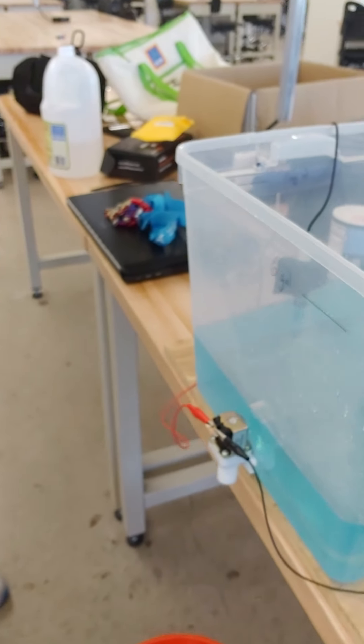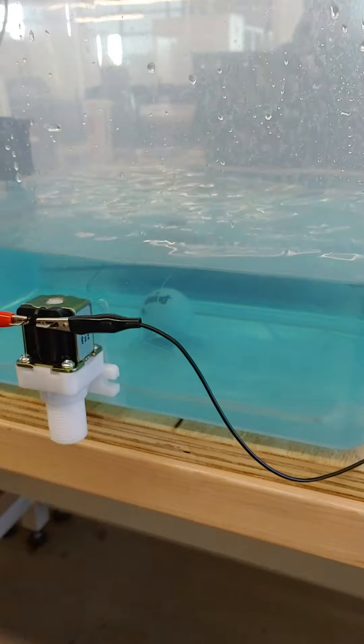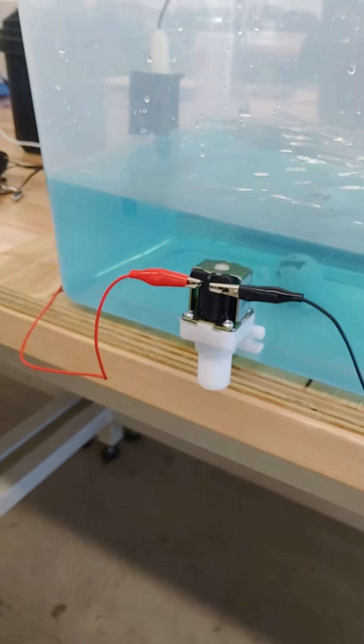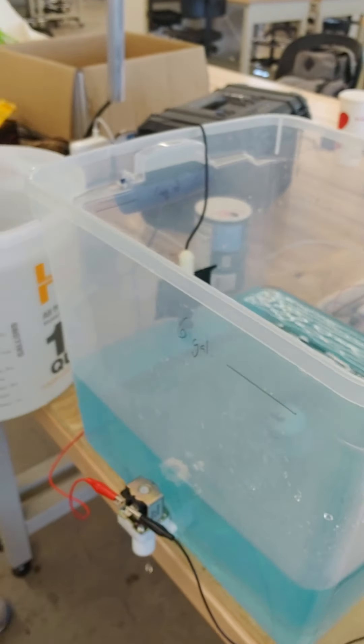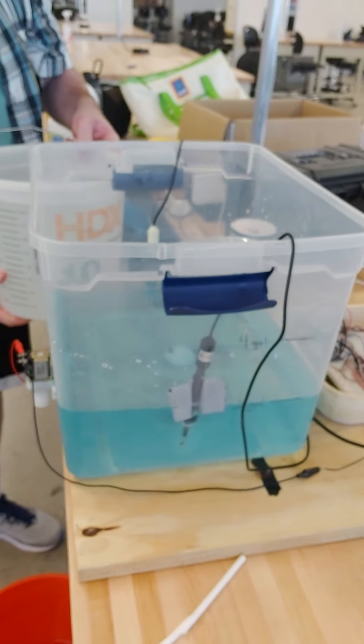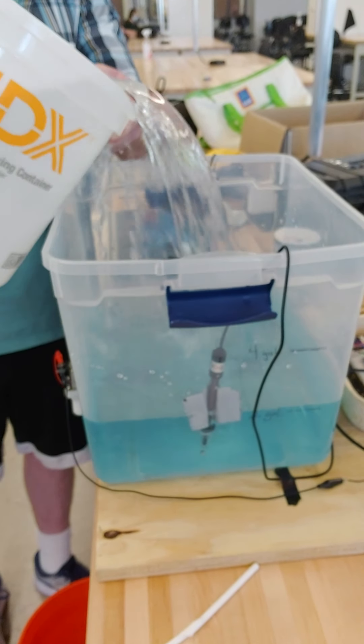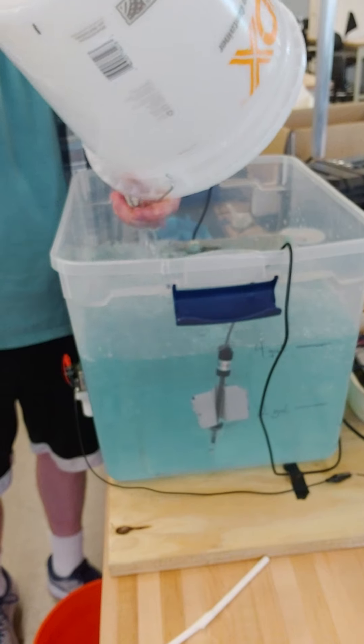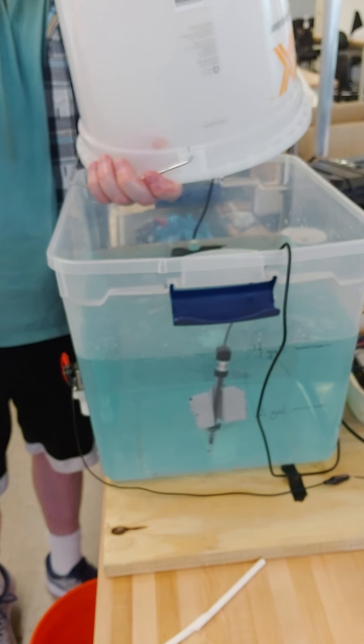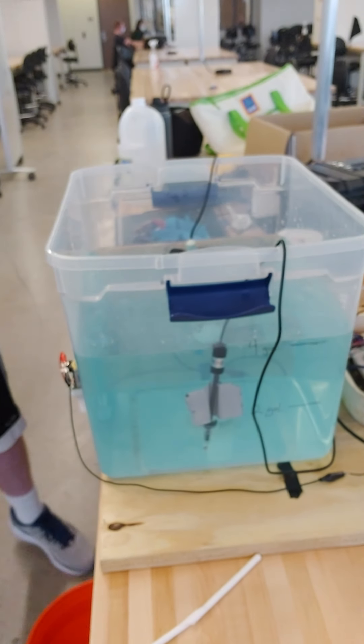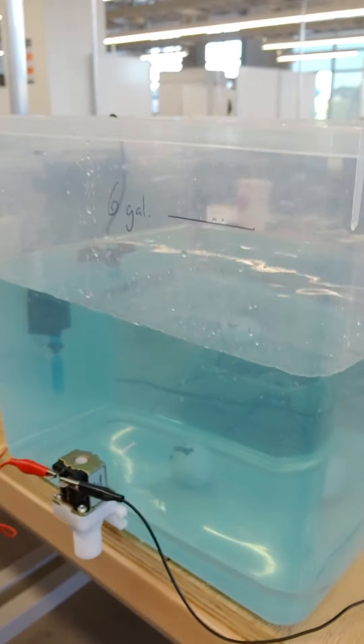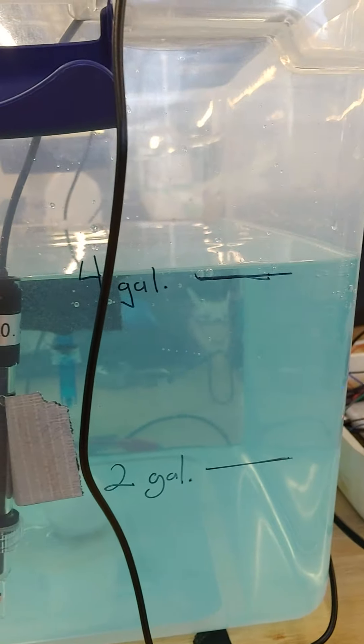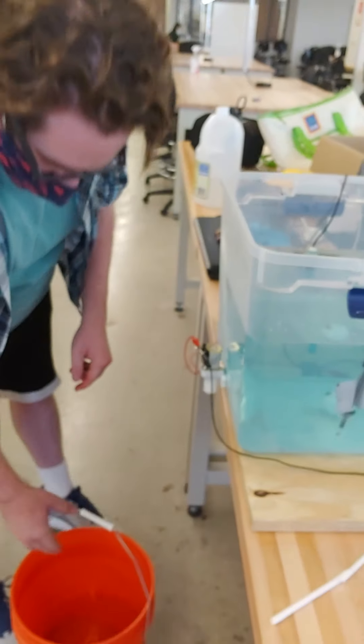Now we're just gonna fill up the tank. We're gonna go from 2 gallons all the way up to 6. We're gonna fill it up and then we're gonna drain it with our valve. So now we're at 4 gallons. We're gonna pour another 2.